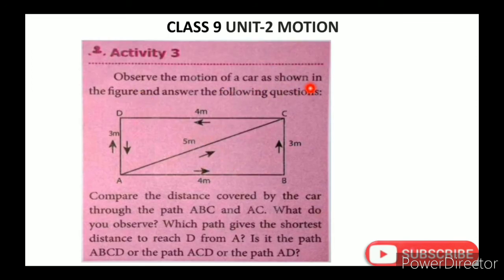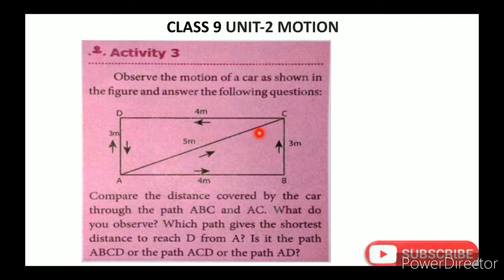Observe the motion of a car and answer the following question: Compare the distance covered by the car through path ABC and path AC. Path ABC versus path AC — compare and what do you observe? AC is shorter. So displacement is the shortest distance, and distance is the actual path length.